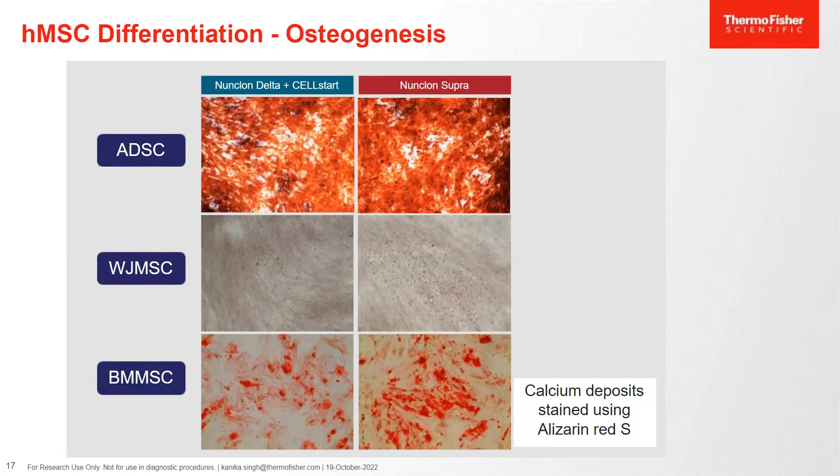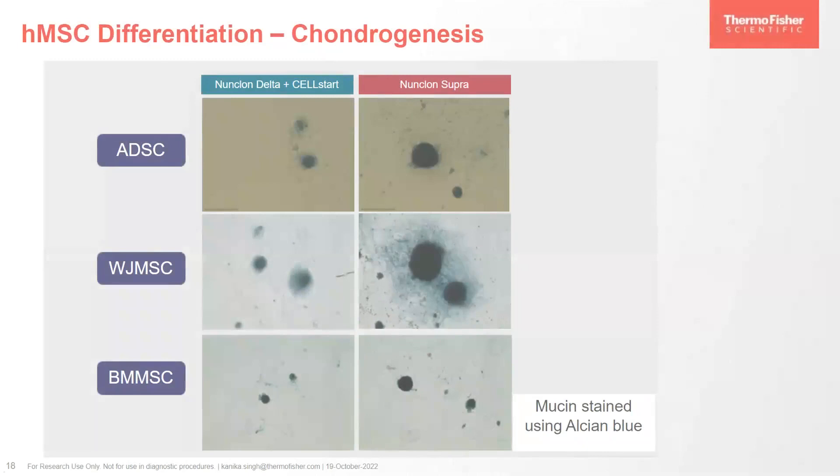Similarly, we did osteogenesis. For visualization, we used Alizarin Red in order to stain the calcium deposits. And as you can see, for all three types of MSCs, the results are similar in the case of Supra and Delta surfaces.